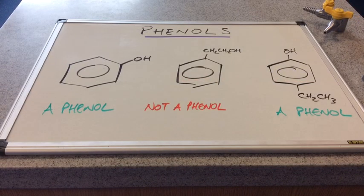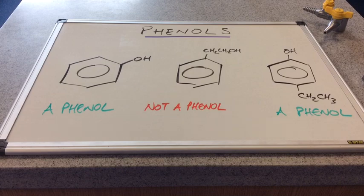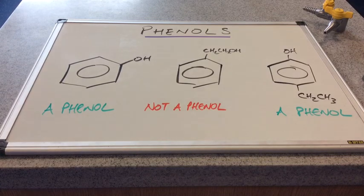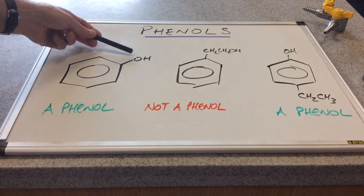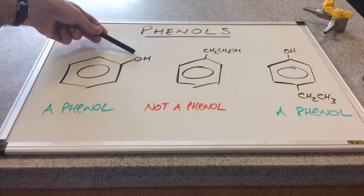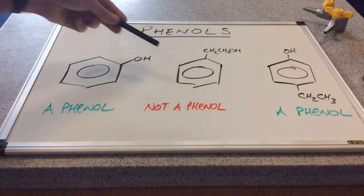So we'll start with how to identify phenols. I've drawn three up on the whiteboard. The first one is a phenol. The middle one isn't a phenol. The third one is. So can you see what's making the left-hand side and the right-hand side one phenols, but the middle one isn't? So it's obviously got something to do with the hydroxyl group, the OH group. And you can see in this one, the hydroxyl group is attached directly to the benzene ring. On this one here, the hydroxyl group is part of this alkyl group.